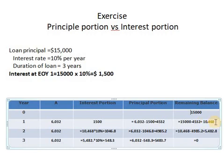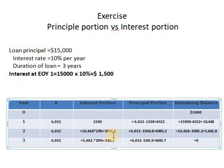Applying 10% interest to the new remaining balance gives $1,046 as the interest portion at the end of year two. The total payment is still $6,032, so $6,032 minus $1,046 gives the principal portion paid at year two. Subtracting that principal portion from the remaining balance gives the new remaining balance after year two.